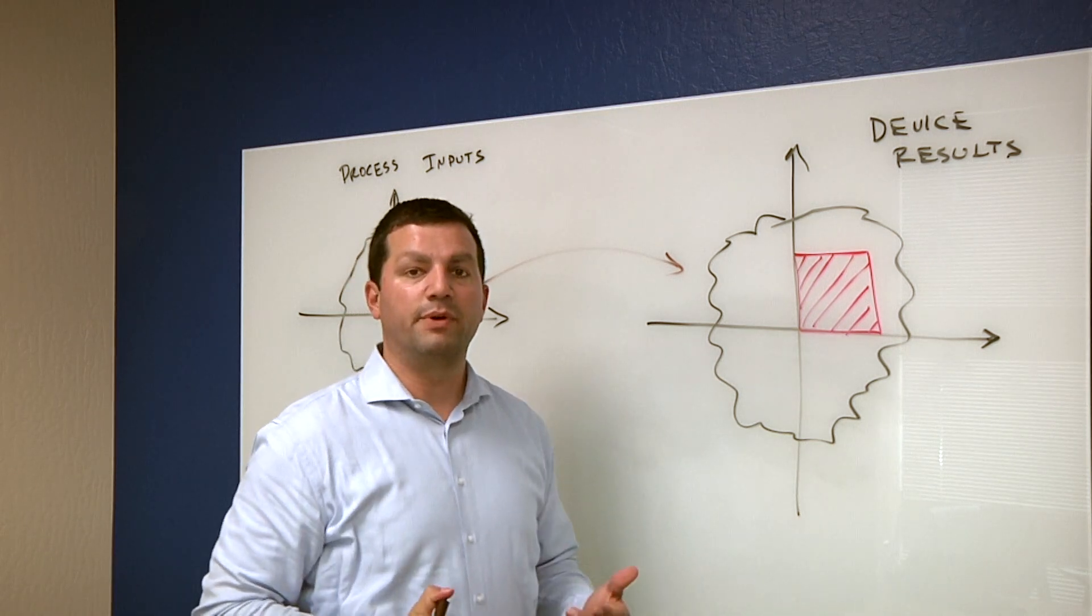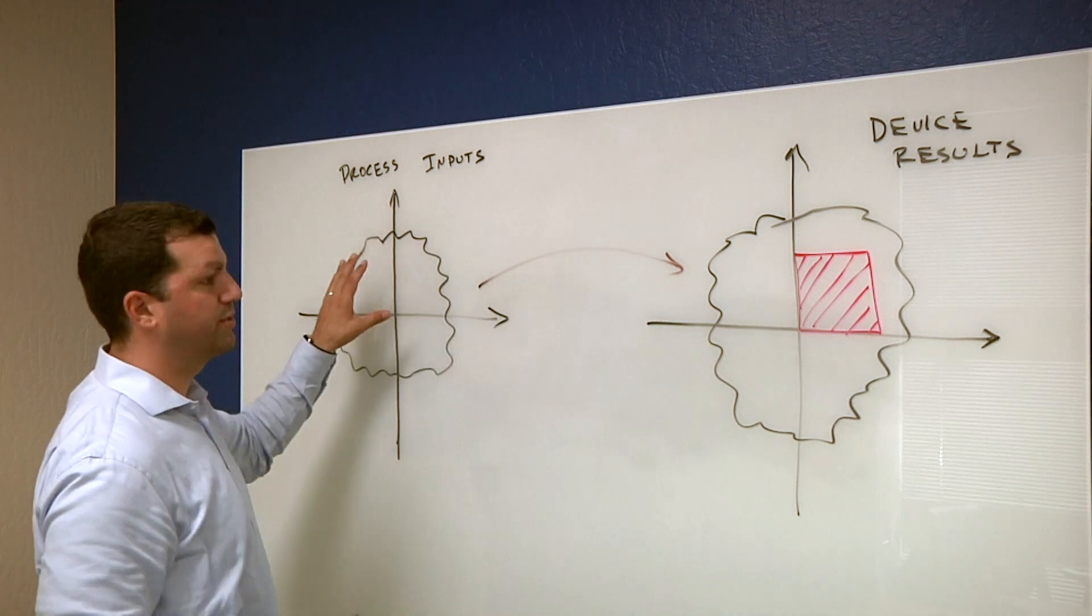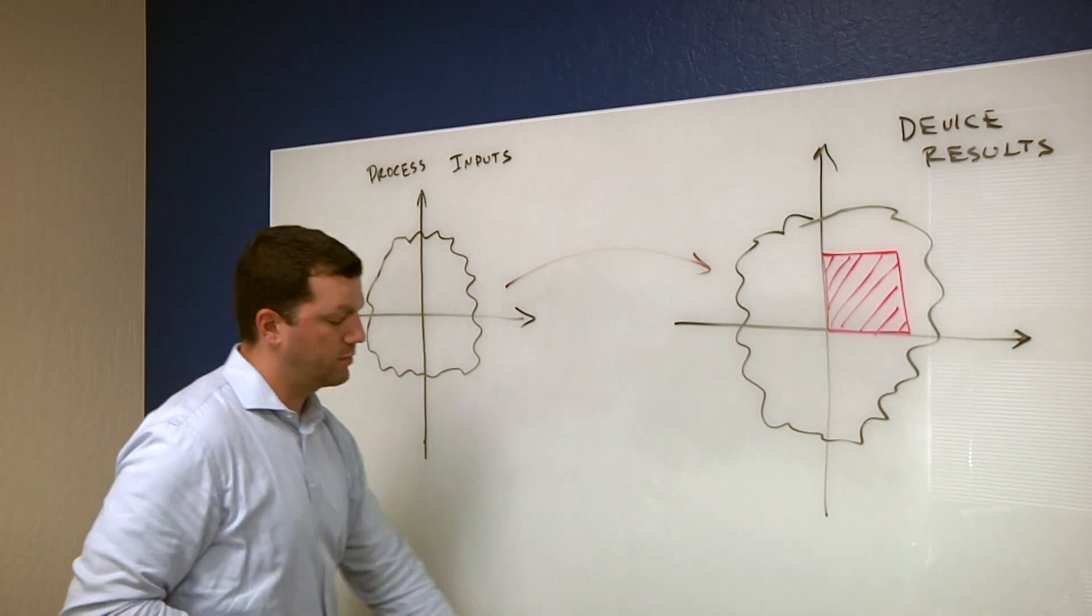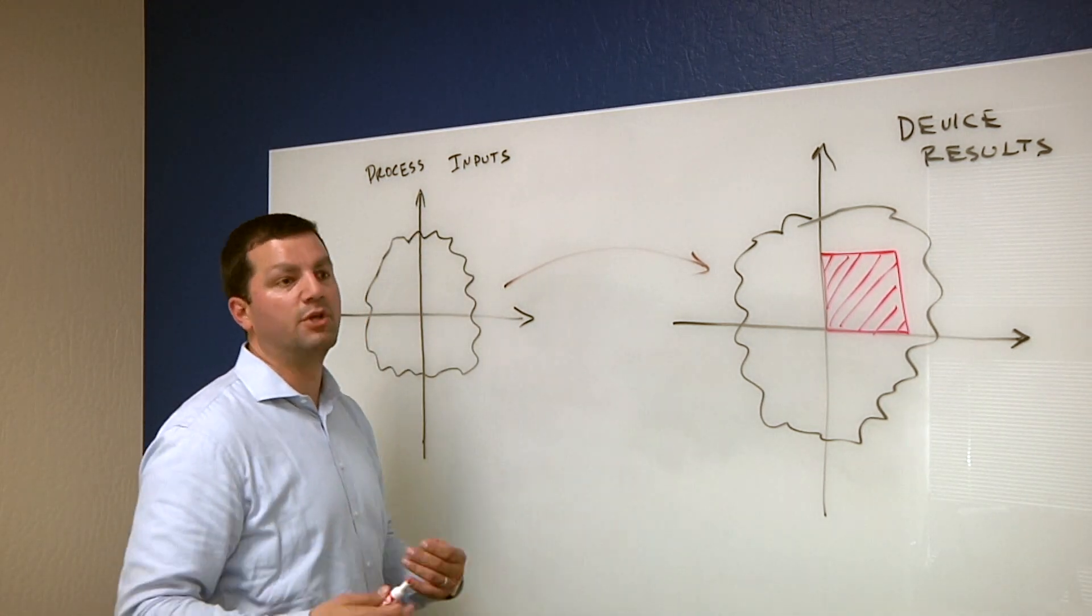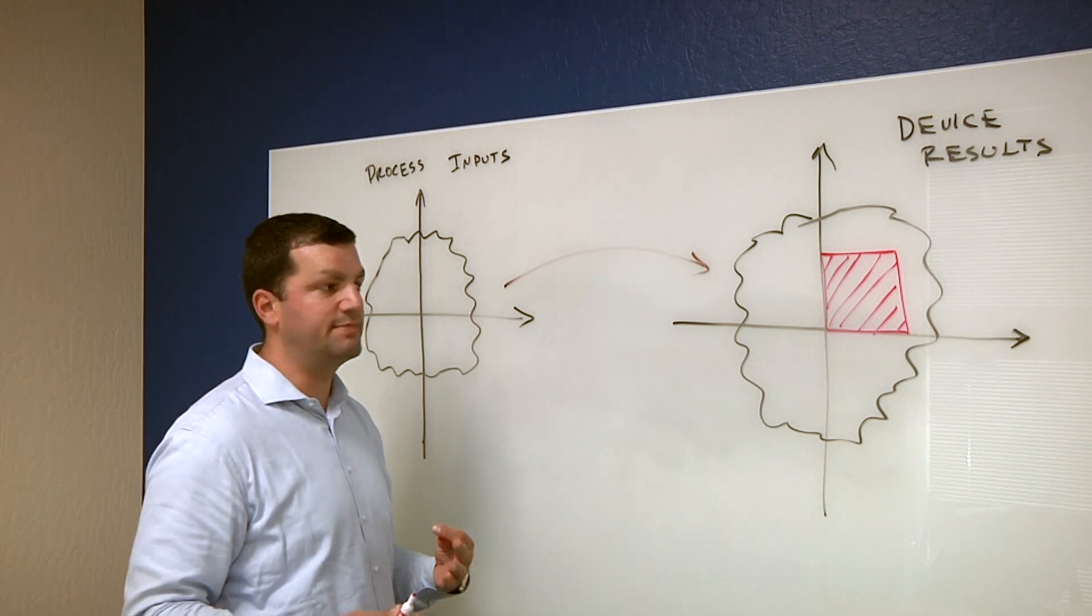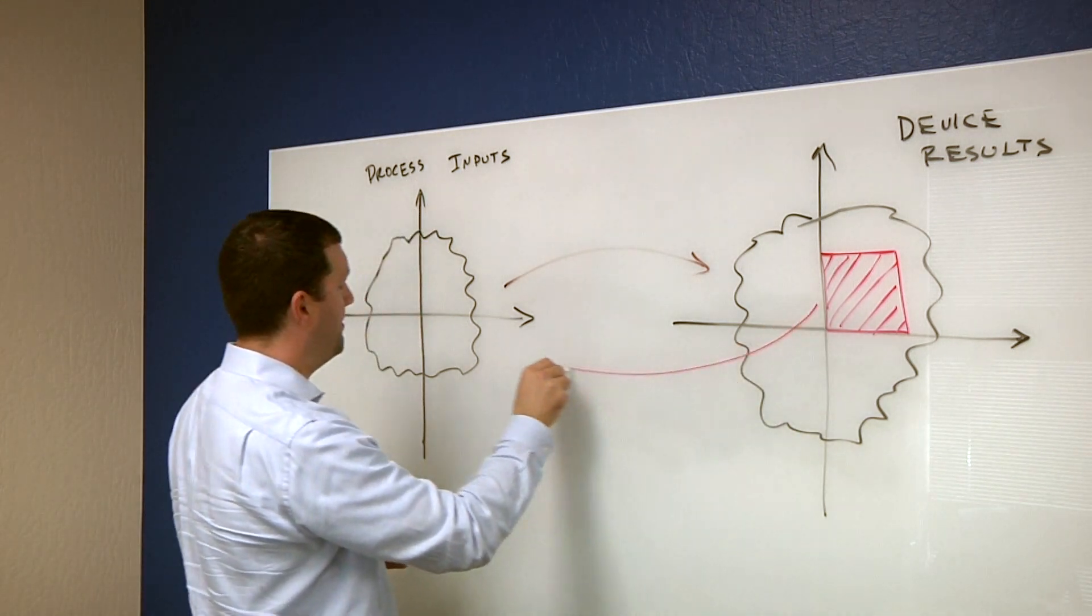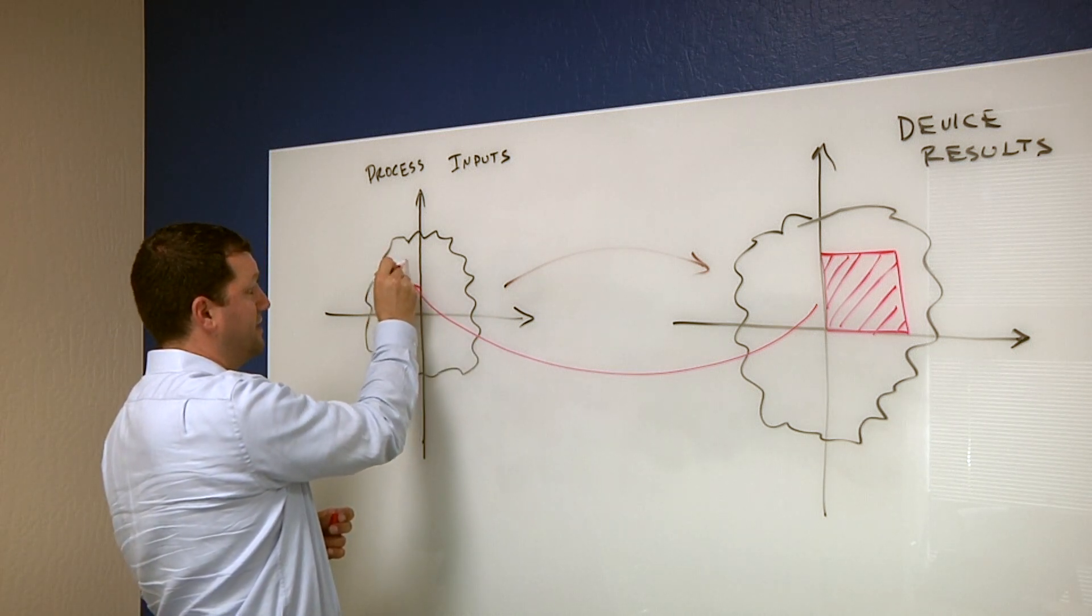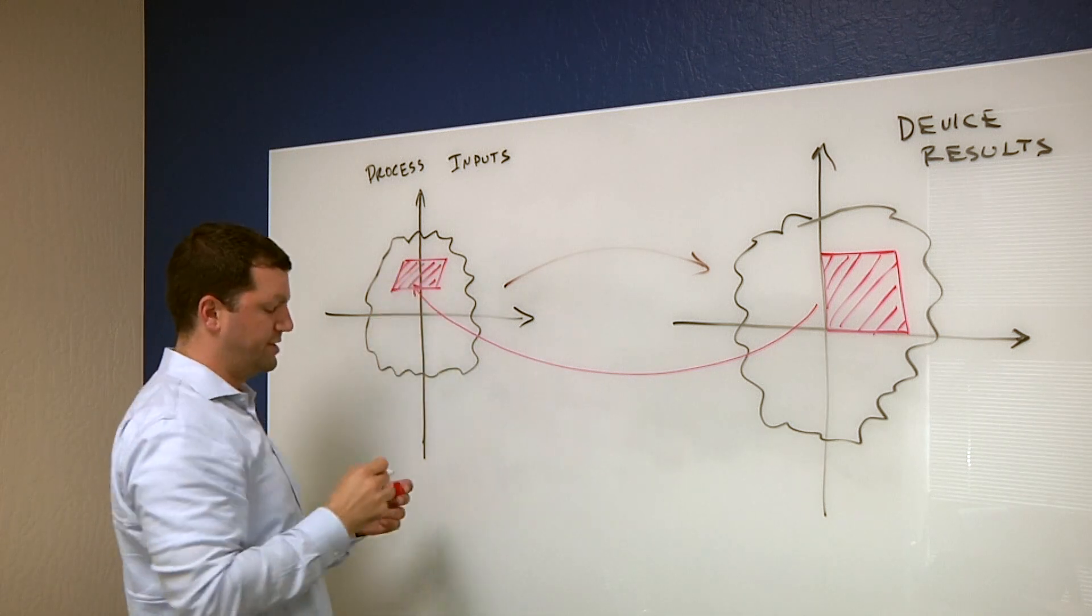The difficult part is taking that data and re-engineering the target process input in order to hit that output. This requires some very complex machine learning, deep learning, artificial intelligence type techniques to understand how this space can map back into a target process space that may be very oddly shaped here, but allows you to optimize your process.